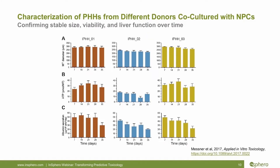Besides visual characterizations, we always quantify certain parameters every time we test new hepatocyte-NPC co-culture combinations. Here we have three different individual hepatocyte donors in co-culture, represented by red, blue, and yellow donors. Each row represents a different measurement. Microtissue diameter is assessed using ImageJ software, and the same diameter is maintained throughout 35 days, meaning cells haven't died and sloughed off. ATP content is a marker of metabolic activity, and we see stable ATP levels over five weeks. Albumin secretion, an important marker of hepatocyte functionality, remains stable through day 28 before starting to drop significantly.